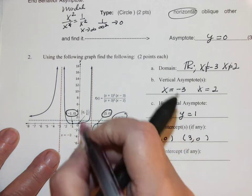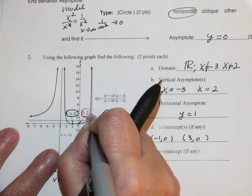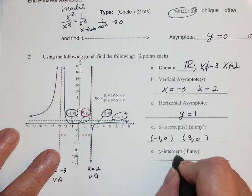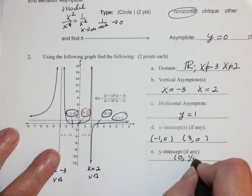The y-intercept is this guy right here, which is zero, one-sixth.